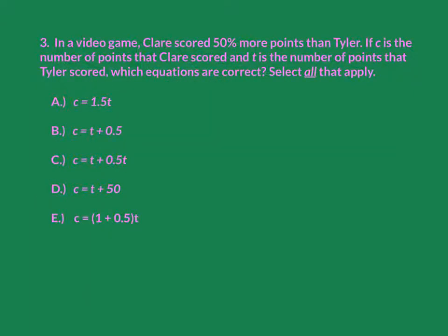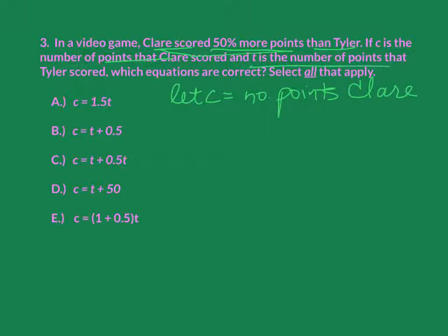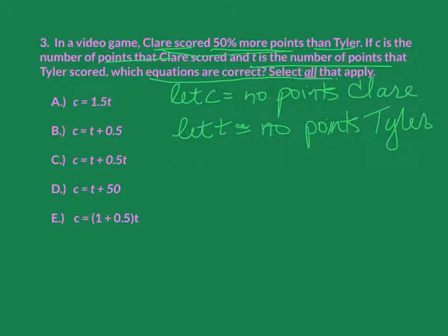Okay. Next. In a video game, Claire scored 50% more than Tyler. If C is the number of points that Claire scored - okay, so I'm going to actually write myself a let statement right now. Let C equal number of points for Claire, and T is the number of points that Tyler scored. Let T equal number of points Tyler scored. Which equations are correct? Select all that apply. Okay, so there's probably going to be more than one.